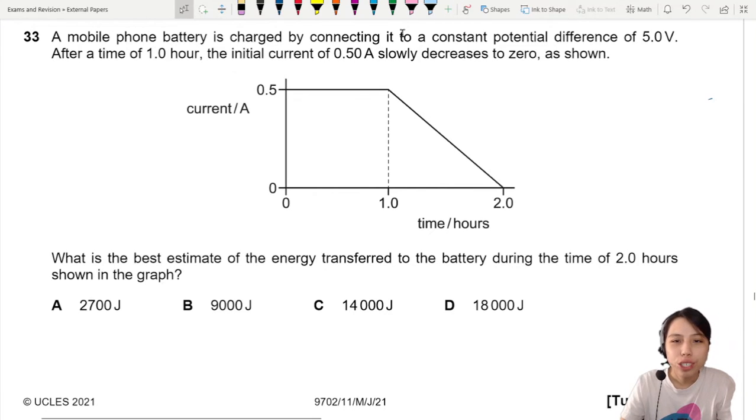A mobile battery is charged by connecting to a constant potential difference of 5 volts. That's your phone charger, actually uses about 5 volts. After one hour, the initial current will slowly decrease to zero. Smart charger. What is the best estimate of the energy transferred to the battery during the time of two hours?